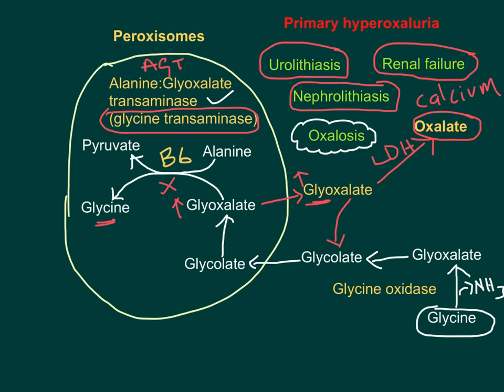To summarize: in primary hyperoxaluria, glycine is catabolized to glyoxalate by glycine oxidase, and glyoxalate moves into the peroxisome for detoxification by glycine transaminase, which needs vitamin B6. If there is a defect in glycine transaminase, glyoxalate leaks into the cytoplasm and is diverted into oxalate formation, leading to calcium oxalate stones and ultimately renal failure. Thanks for watching — if you liked the video, give a thumbs up and consider subscribing for regular updates.